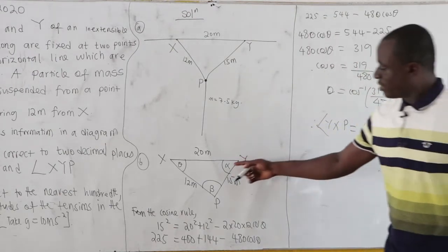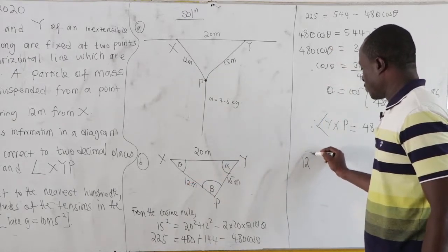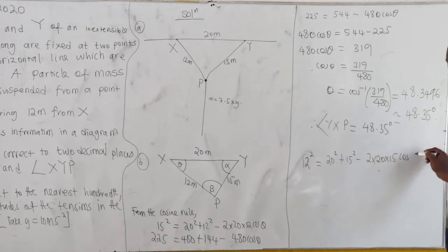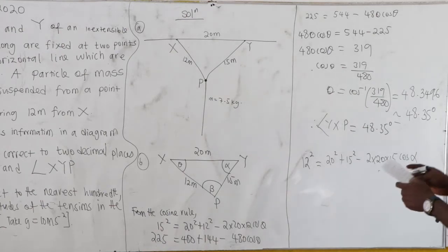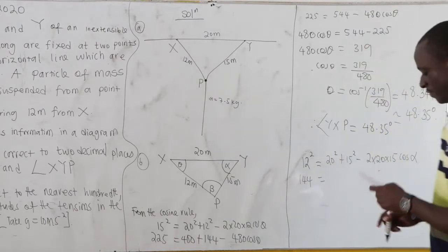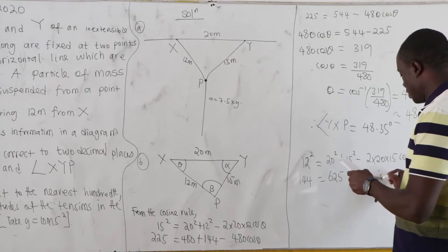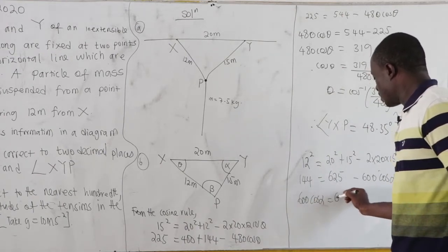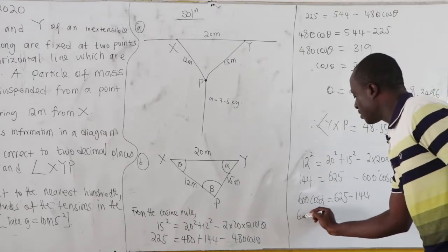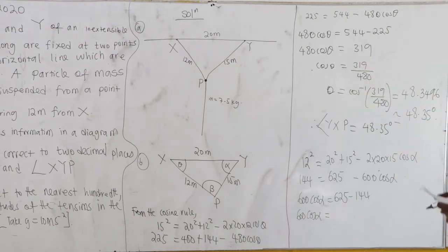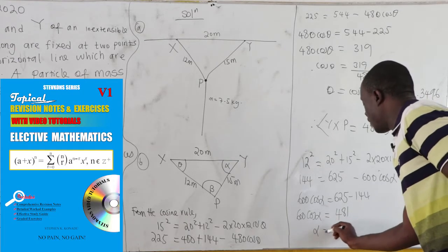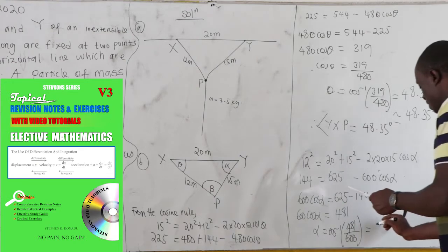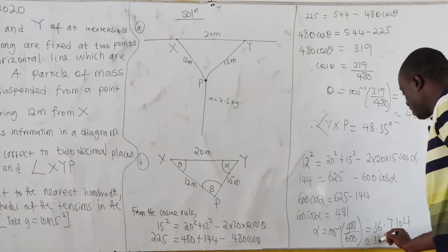Now finding angle alpha at Y. The side opposite alpha is XP = 12 m, so: 12² = 20² + 15² − 2(20)(15)cos α. That gives 144 = 400 + 225 − 600 cos α, so 144 = 625 − 600 cos α. Rearranging: 600 cos α = 625 − 144 = 481.